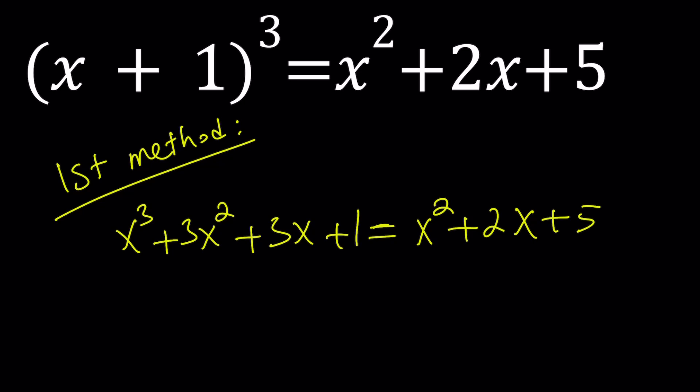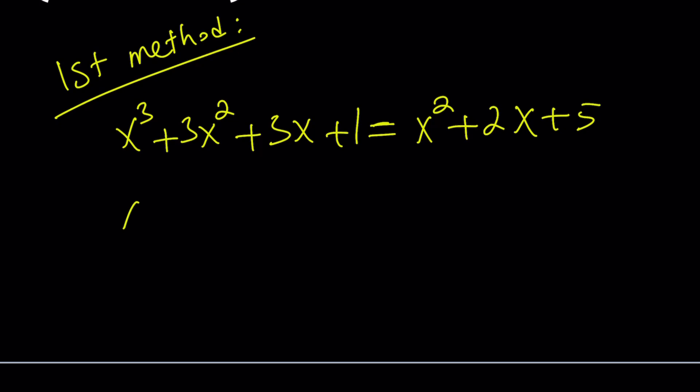x cubed. 3x squared minus 2x squared. 3x minus 2x. 1 minus 5 is negative 4. And that is equal to 0. So we get x cubed plus 2x squared plus x minus 4 equals 0.